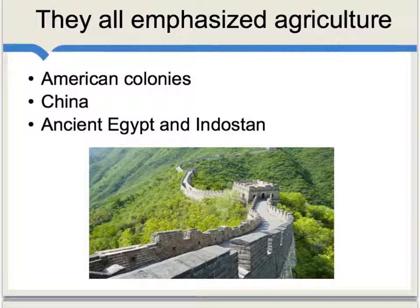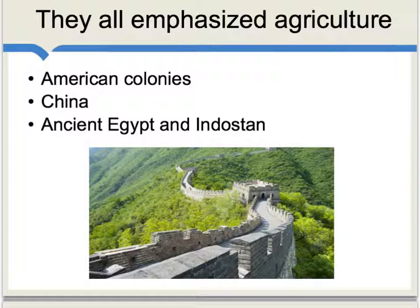Nonetheless, Smith proceeds and cites a few examples of very wealthy societies which indeed emphasized agriculture. He mentions the American colonies, China, and ancient Egypt and Indostan, and it seems that Smith considers these the examples or cases when human beings have actually been the wealthiest.